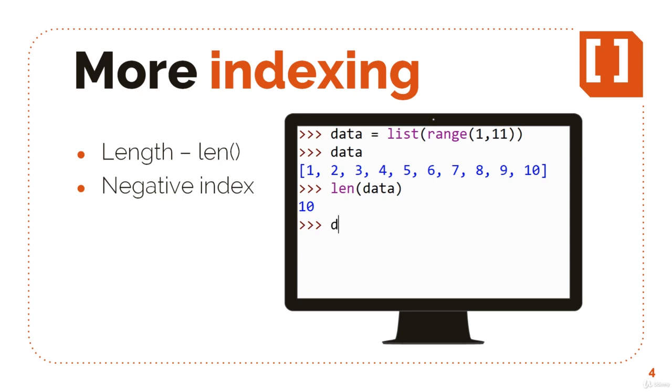You can use negative numbers as an index to check the value from the end of the list. So minus one is the last value, minus two is the second last and so on.